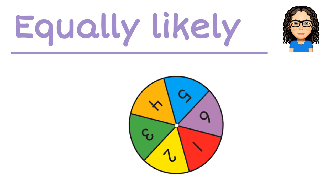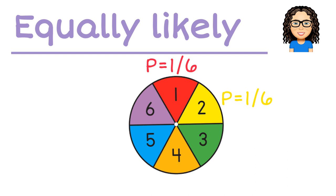When I think about equally likely, this is the idea that each outcome has the same chance. So in our spinner here we can see that each colour is the same size, so the probability is the same.